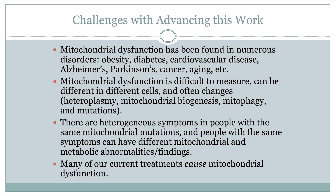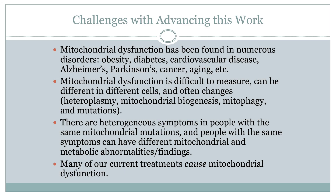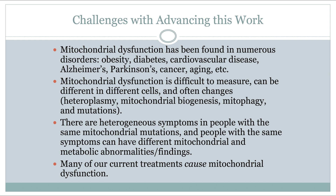What are some of the academic challenges of advancing this work? Mitochondrial dysfunction has been found in everything — obesity, cardiovascular disease, Alzheimer's disease, Parkinson's disease, cancer, aging. So in order to explain the mitochondrial theory of bipolar disorder, we have to explain the mitochondrial theory of everything. Mitochondrial function is difficult to measure, can differ across cell types, and often changes due to numerous factors. There are heterogeneous symptoms in people with the exact same mitochondrial mutations — two people from the same family with identical mutations: one can have bipolar disorder, the other may not. And people with the same symptoms may have very different mitochondrial or metabolic findings.